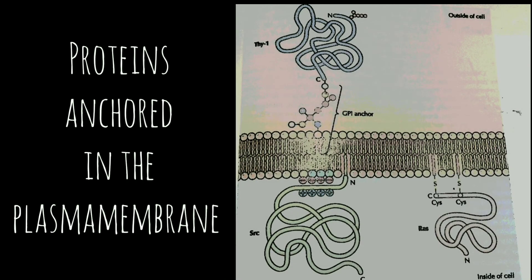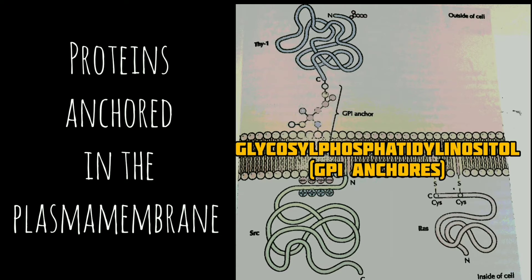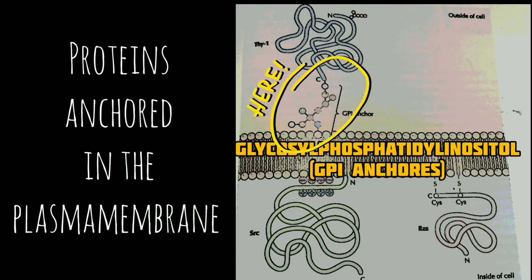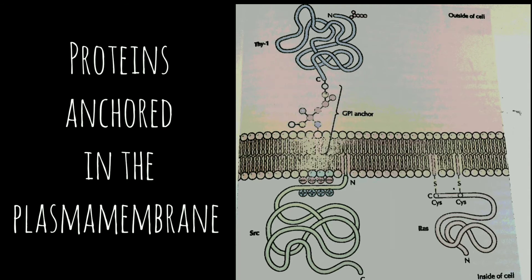In contrast to transmembrane proteins, a variety of proteins are anchored in the plasma membrane by covalently attached lipids or glycolipids. Members of one class are inserted into the outer leaflet of the plasma membrane by glycosyl phosphatidylinositol (GPI) anchors. Some proteins are anchored in the outer leaflet by GPI anchors added to their C-terminus in the endoplasmic reticulum. These proteins are glycosylated and exposed on the cell surface. Other proteins are anchored in the inner leaflet of the plasma membrane following their translation on free cytosolic ribosomes.